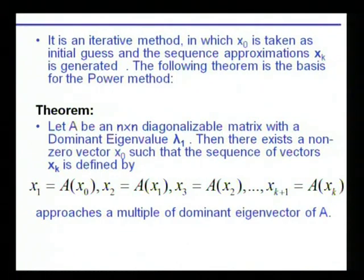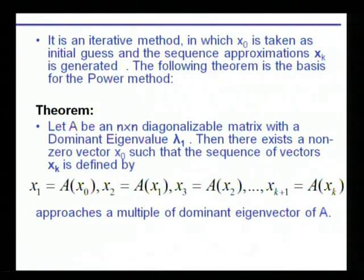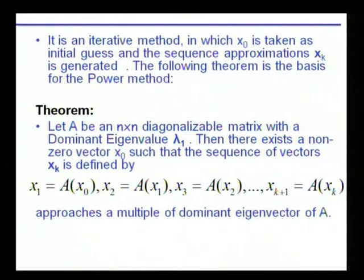The theorem for the power method: Let A be an n×n diagonalizable matrix with a dominant eigenvalue lambda1. Then there exists a non-zero vector x0 such that the sequence xk defined by x1 = Ax0, x2 = Ax1, and in general x_{k+1} = A·xk, approaches a multiple of the dominant eigenvector of A. Starting with some vector x0 and repeatedly applying A, the sequence approaches the dominant eigenvector.